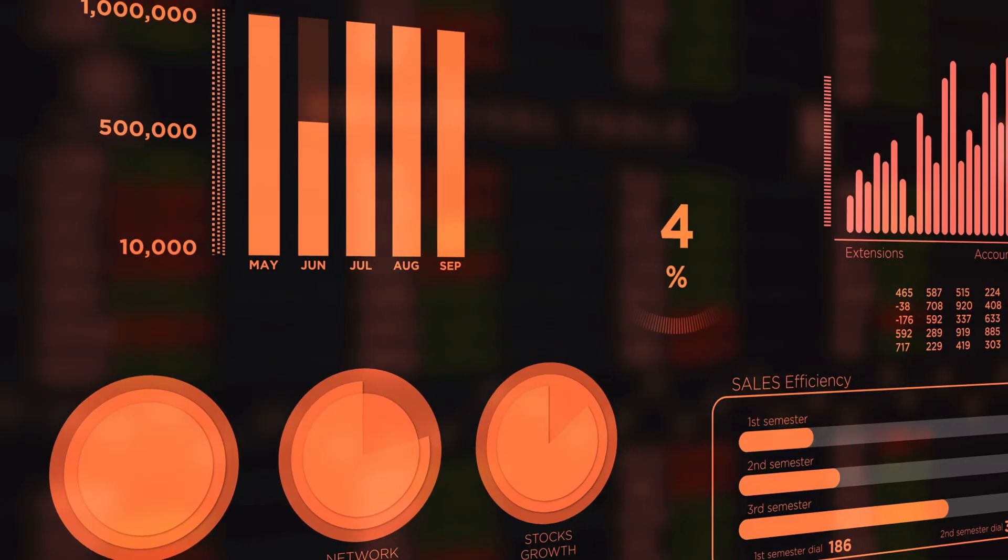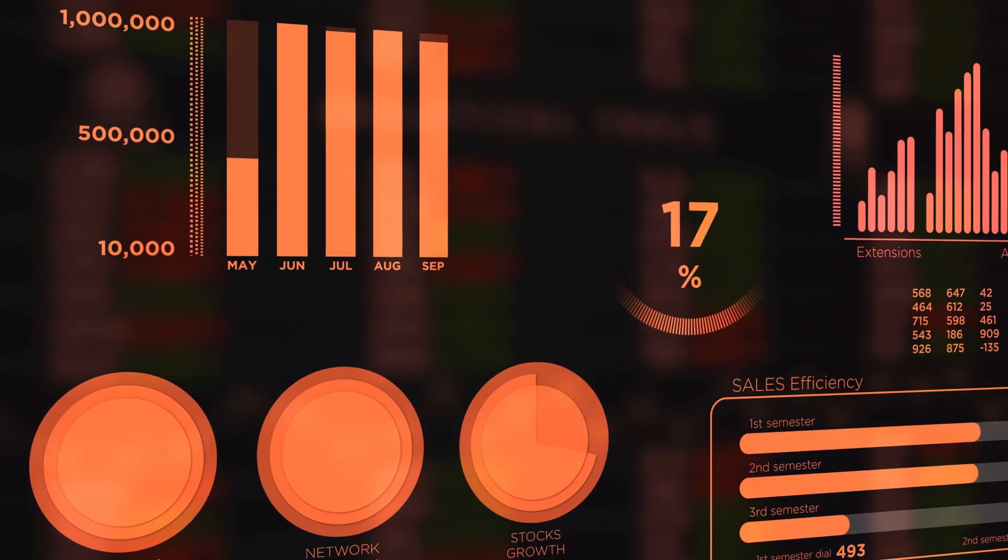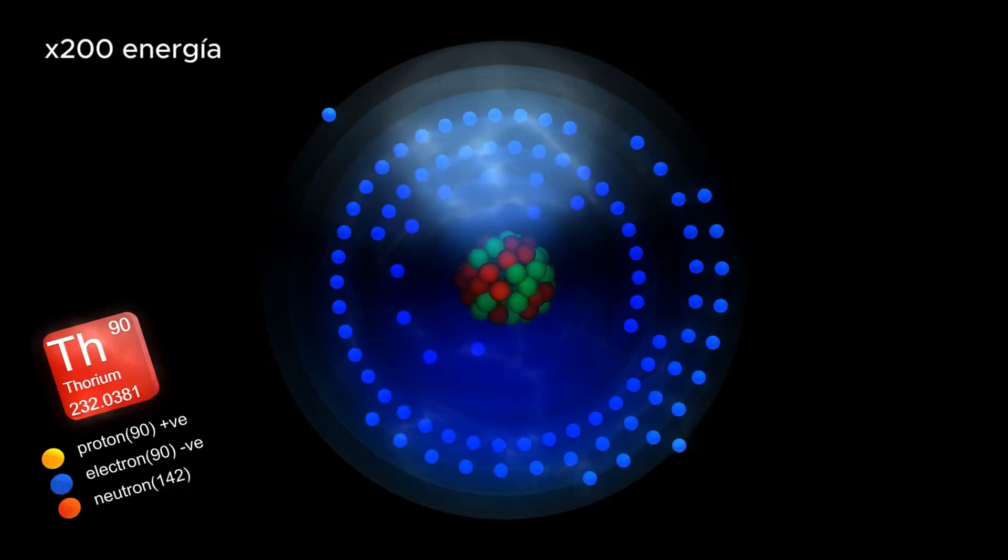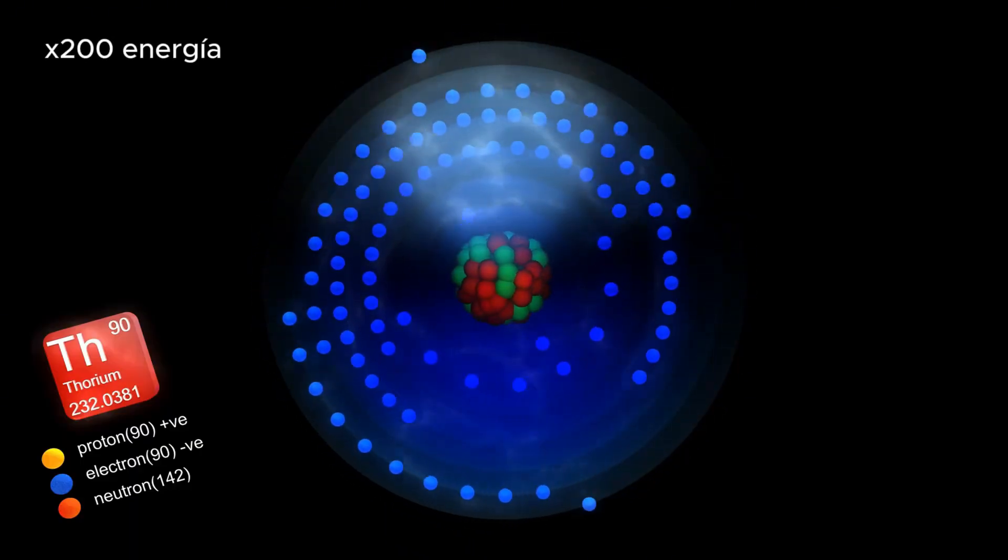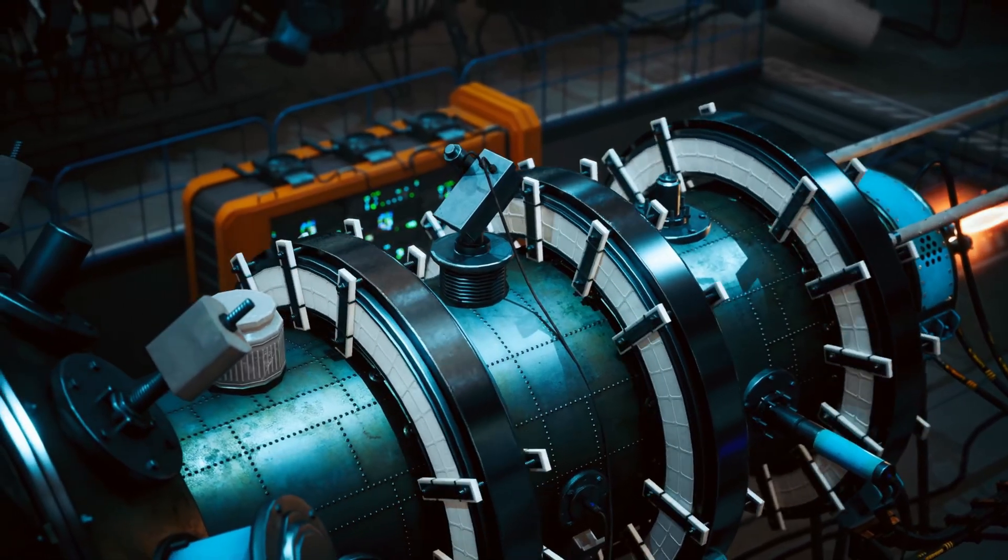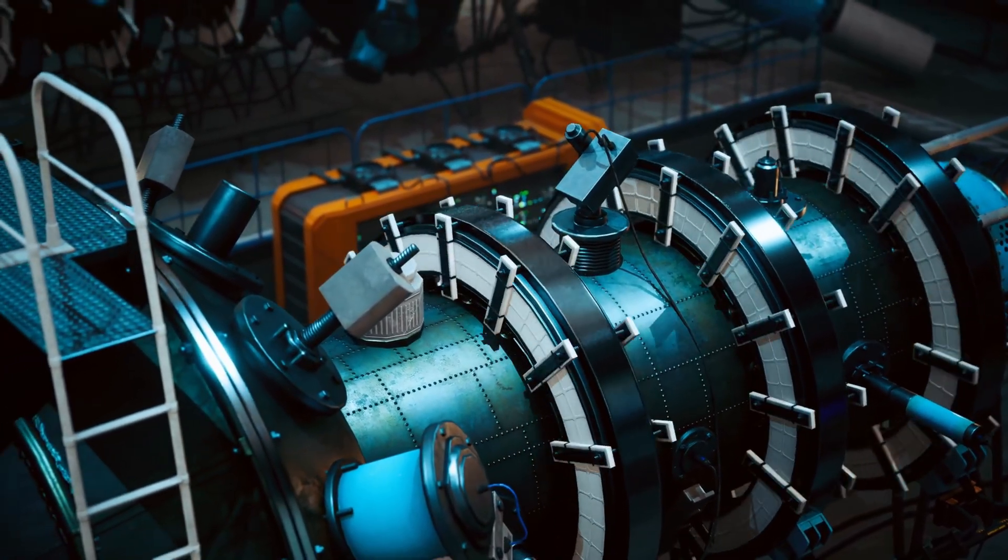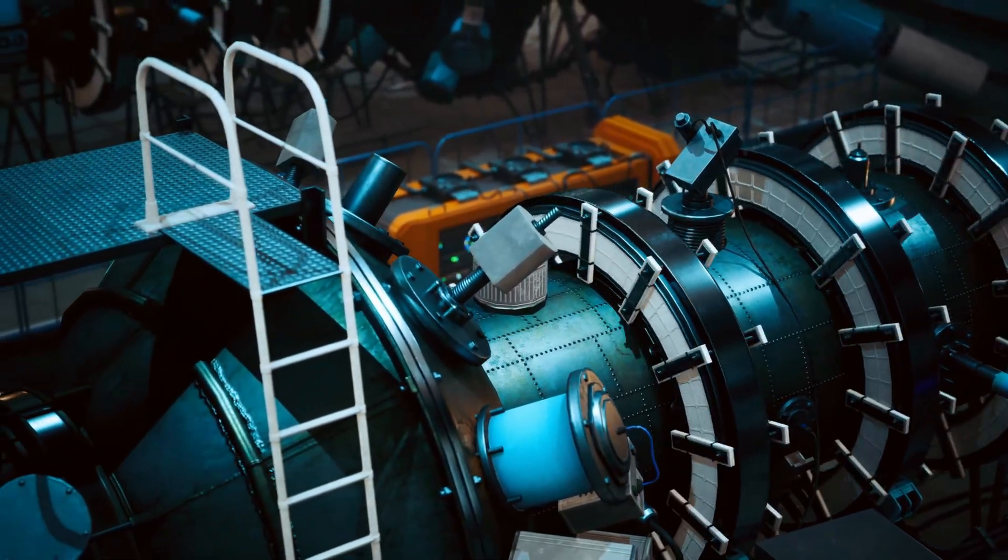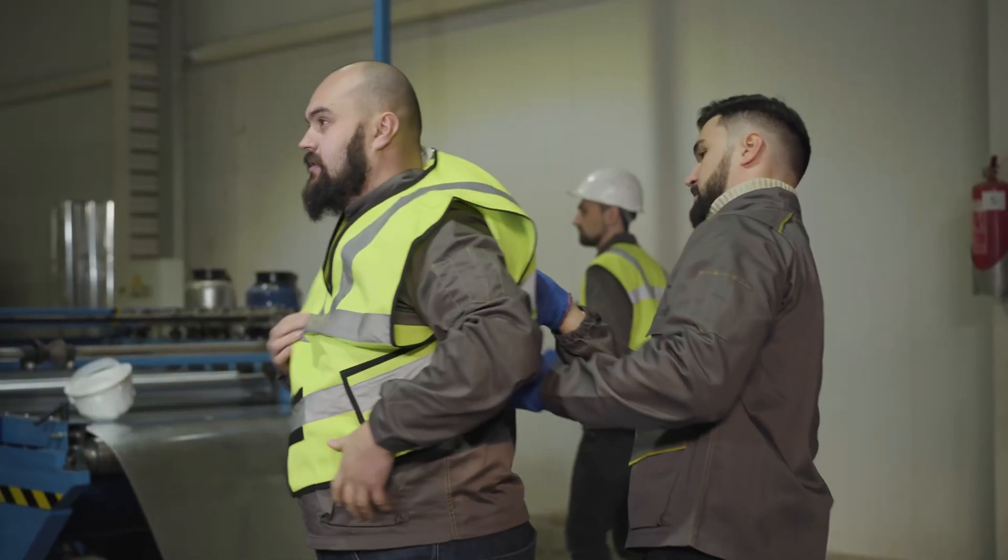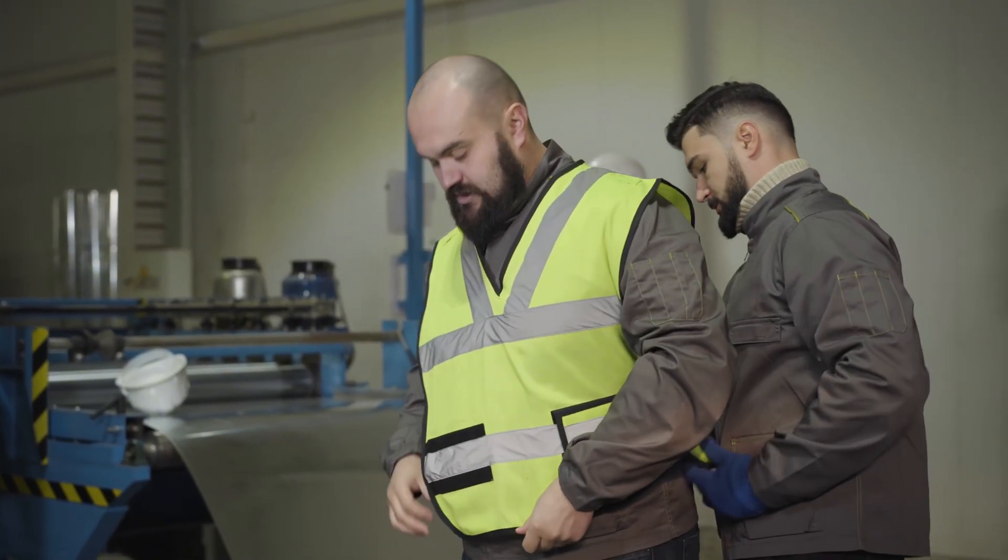The second advantage is energy efficiency. One kilogram of thorium can generate up to 200 times more energy than one kilogram of uranium. This means reactors can be much smaller and still produce enormous amounts of energy.